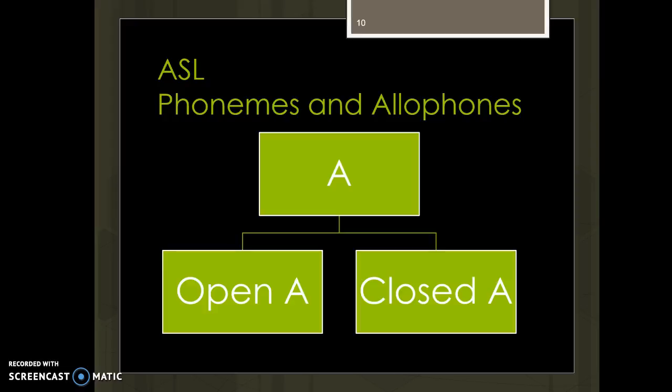We can see this in ASL as well. In ASL, we have the handshape A. Whether or not you open your thumb so it sticks out, you're producing an A. Some words tend to have the thumb out, some tend not to — but you'll never find a minimal pair of two signs where the only difference is whether the thumb is out. Sometimes the thumb sticks out more, sometimes less, but there's never a time when thumb-out means one thing and thumb-in means another. So there is a category — the A — with the thumb out or in as allophonic variations that don't change meaning.